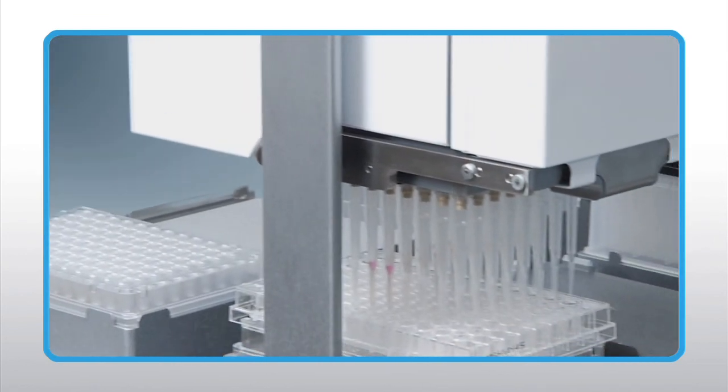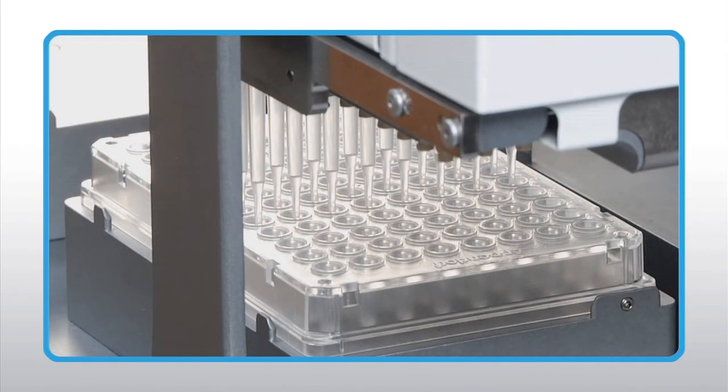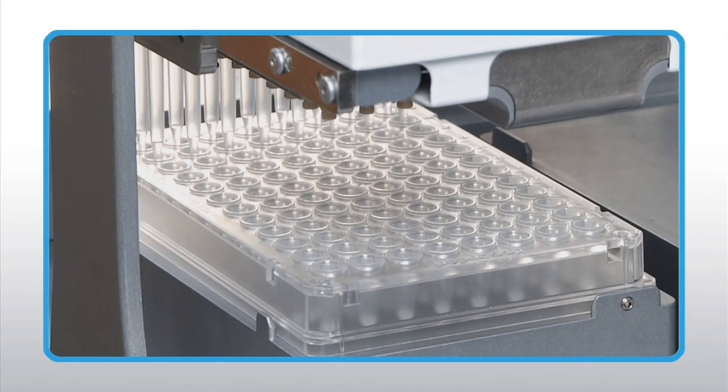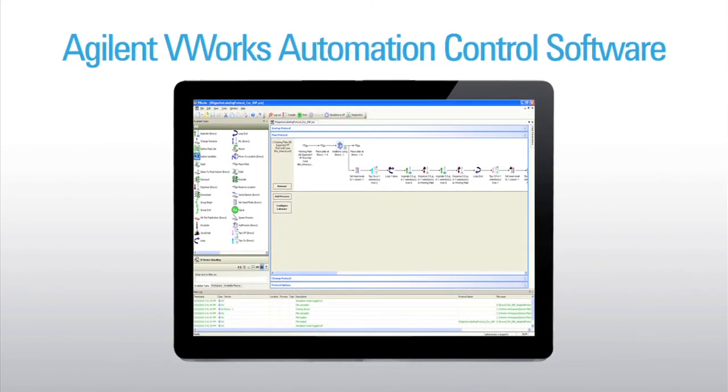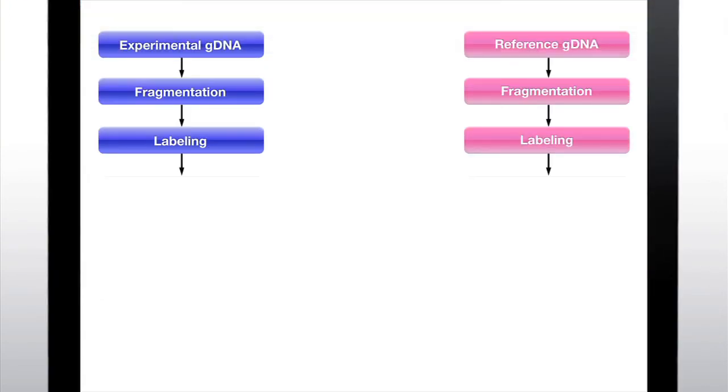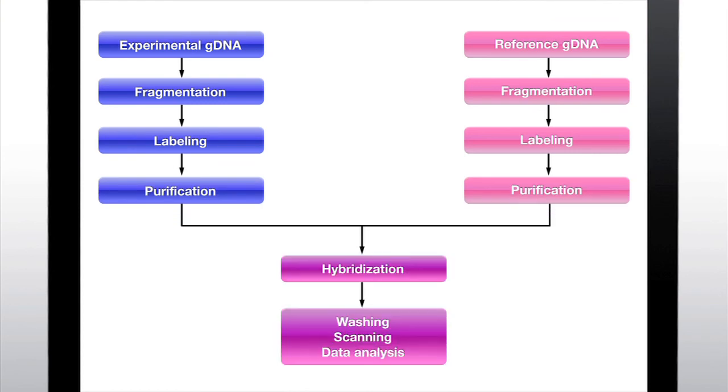A new method was developed to automate the CGH sample preparation in a 96-well format by using the Agilent Bravo automated liquid handling platform. The V-Works automation control software provides protocols for the fragmentation, labeling, purification, and pre-hybridization setup.